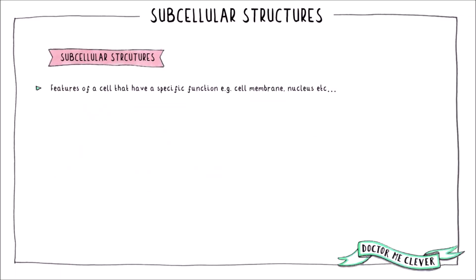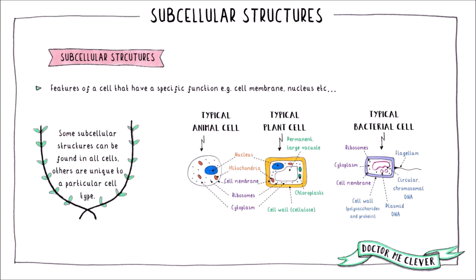Subcellular structures are features of a cell that have a specific function. Examples include the cell membrane and nucleus. Some subcellular structures can be found in all cells, while others are unique to a particular cell type.